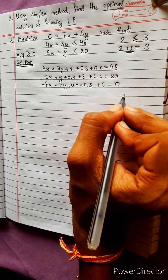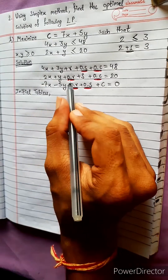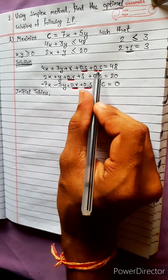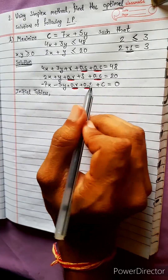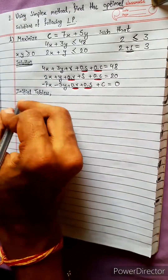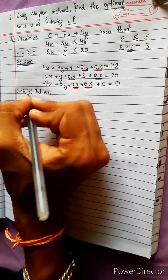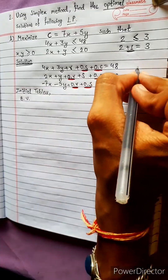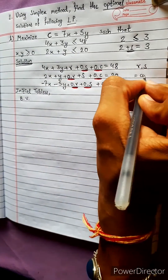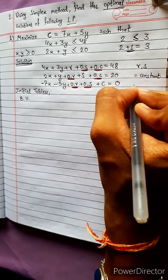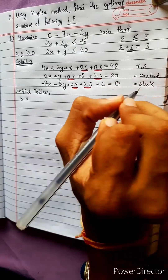This is our standard form. Now these 9 elements are 0. 0 into something is 0. Now we compare the basic variables. Rs is the constant and slack variable — these are the same values.